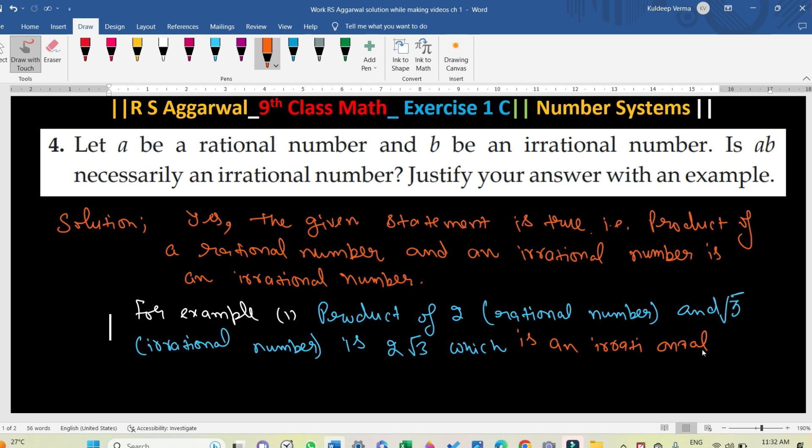Irrational - that's the spelling. You will see if there is a mistake, sorry for that. So in this way you can see it. Root 8 is an irrational number and 9 is a rational number, and both of them will be 9 root 8.